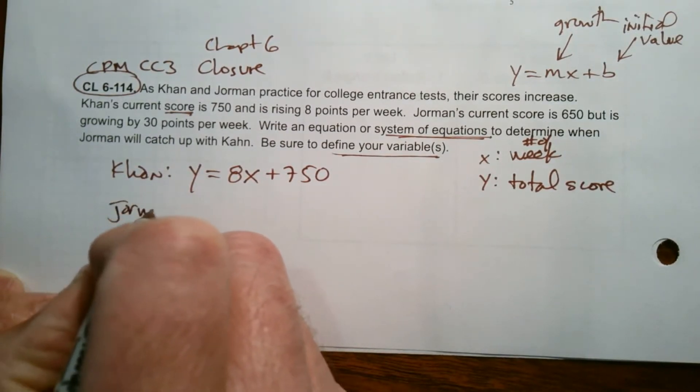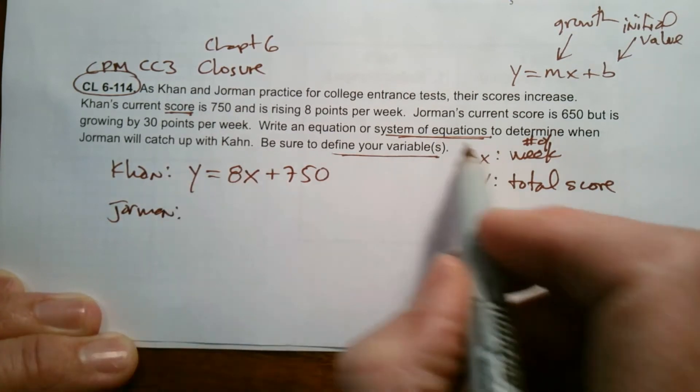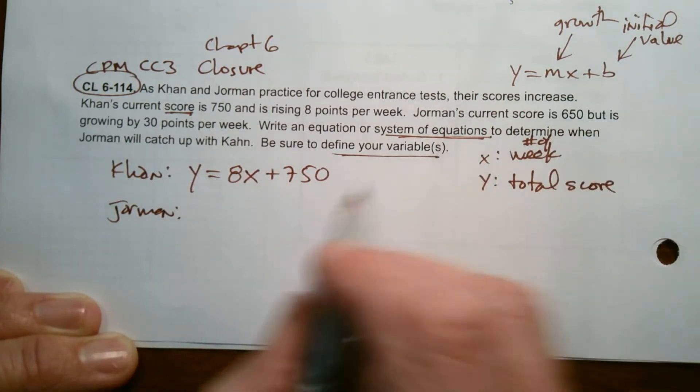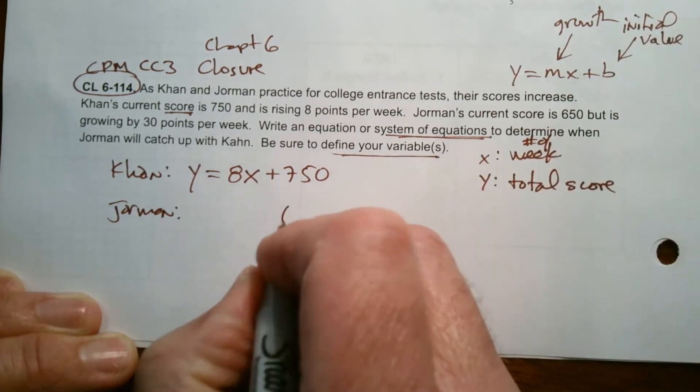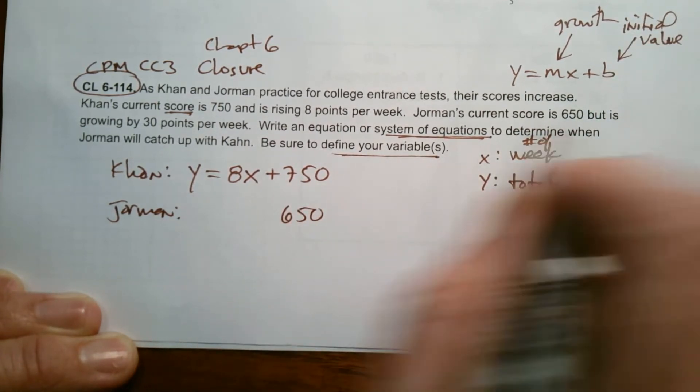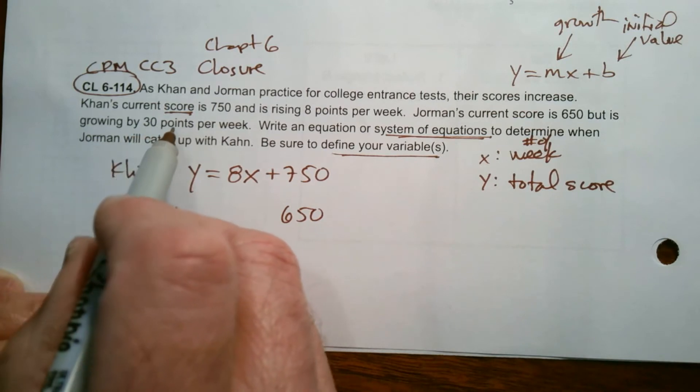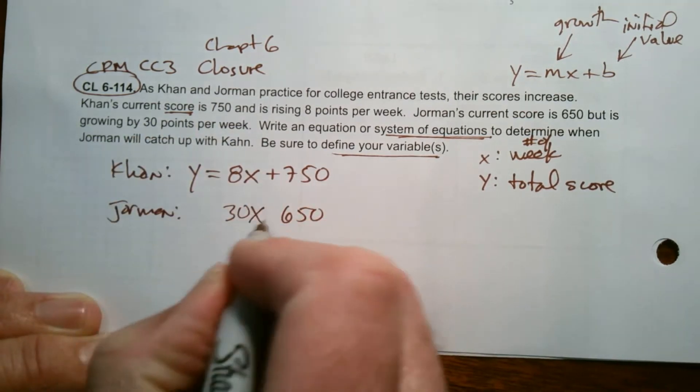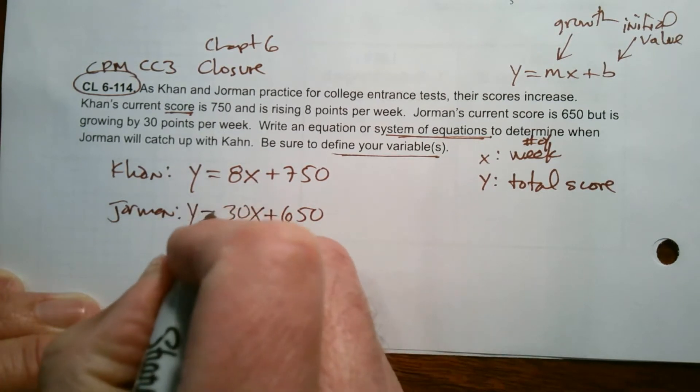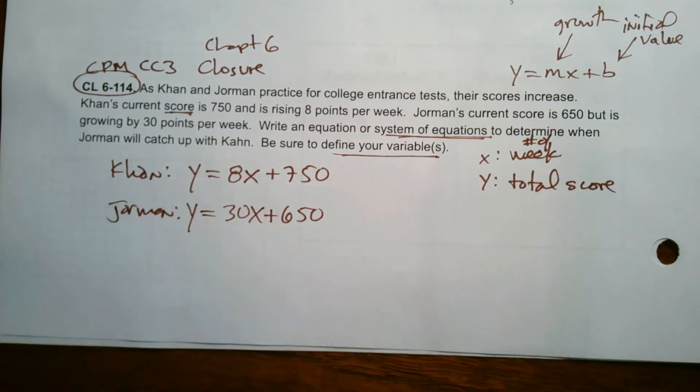So Jorman, it says Jorman's current score is 650. So that's his initial value is 650, but is growing by 30 points per week. So 30X. So his equation would be Y is equal to 30X plus 650.